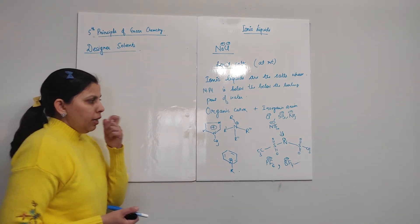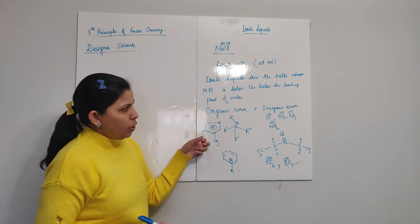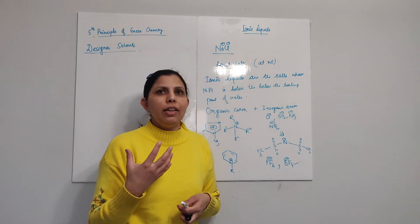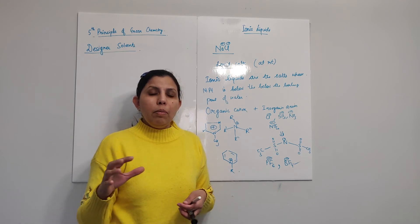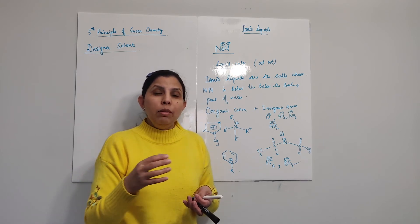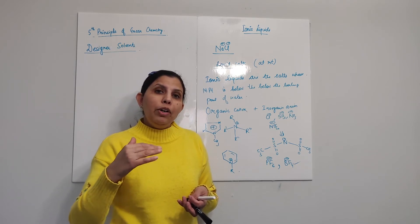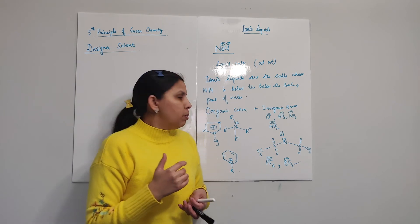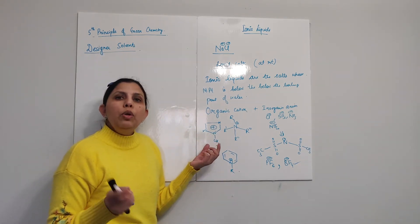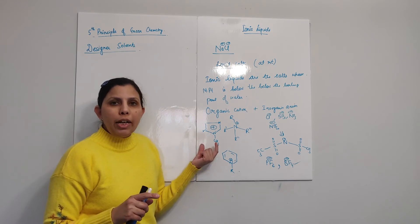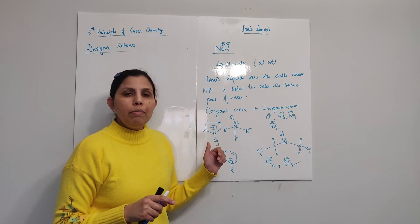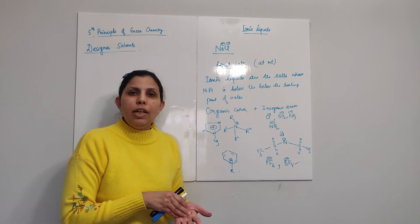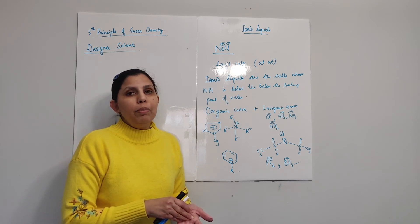Another important point: the cation you choose should not be too symmetrical. We can imagine that the more symmetrical a cation is, the more efficiently it packs into the crystal lattice, and the more efficient the packing, the higher the melting point — pushing it toward sodium chloride rather than an ionic liquid. So for an ionic liquid to be liquid at room temperature, we should choose cations that are less symmetrical. The substituents on the cation are generally chosen to be different from one another to avoid imparting symmetry.